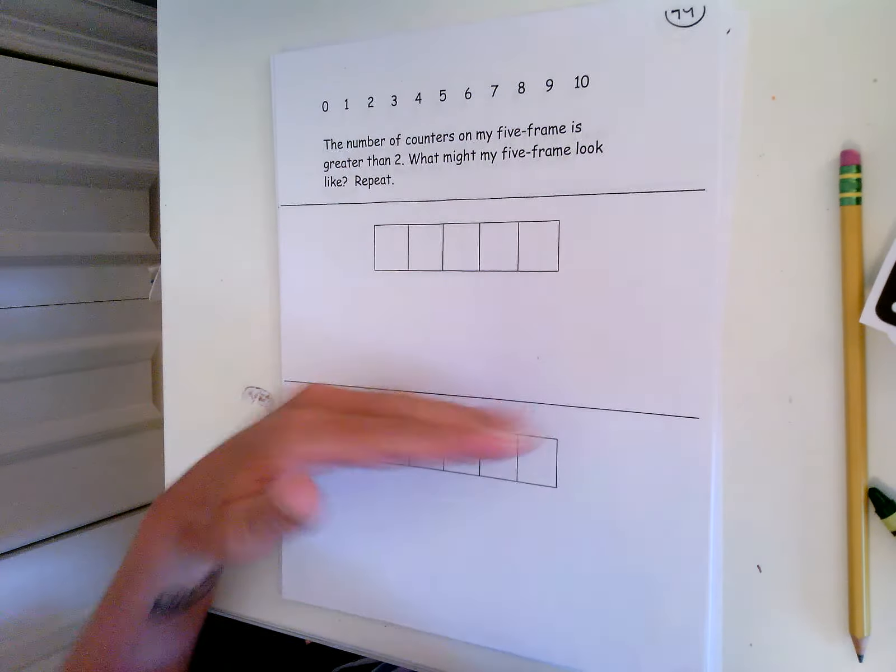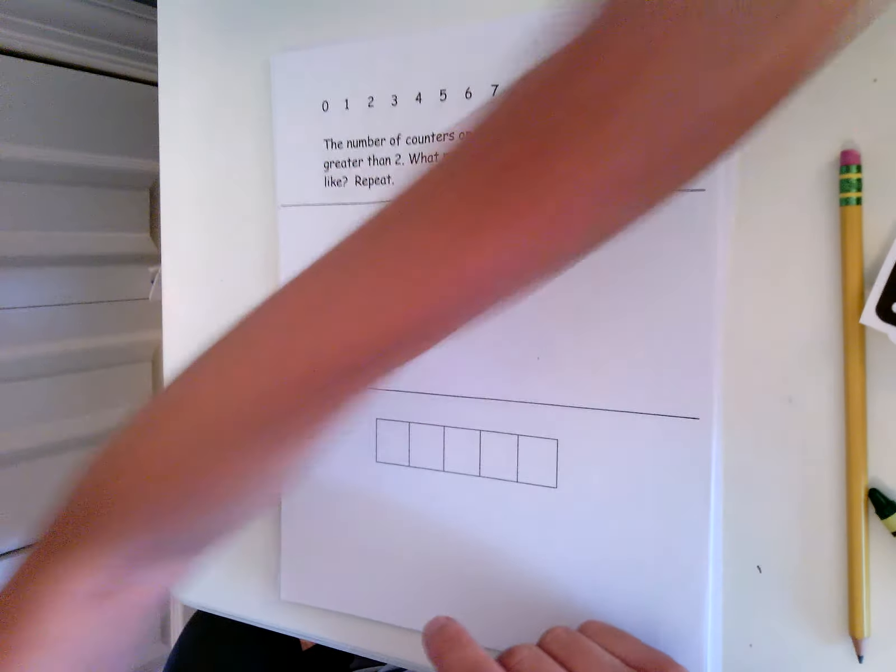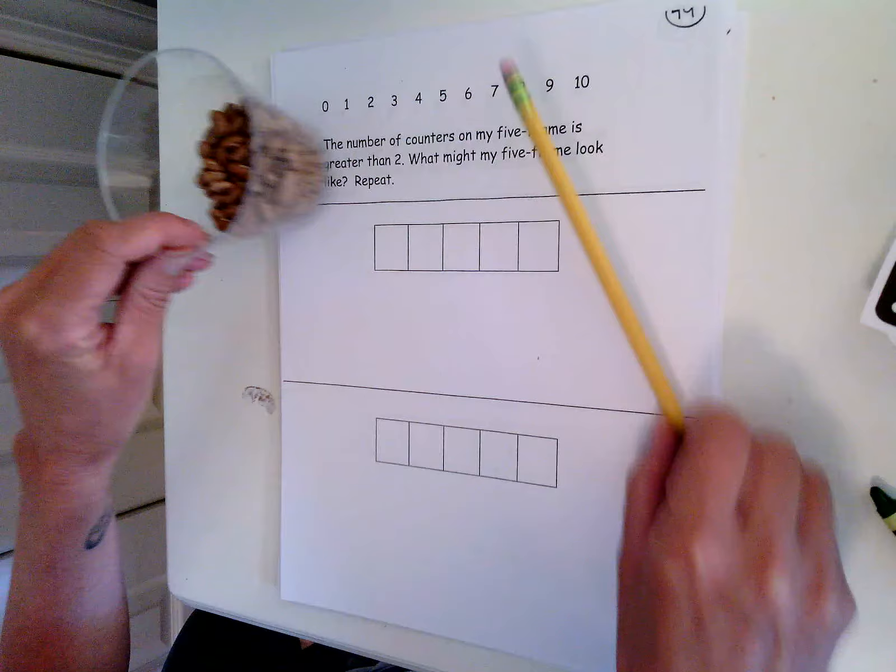So we're going to do it two times. You don't need a five-frame because there's one for us on the paper, but you will need some math counters and a pencil and a crayon.